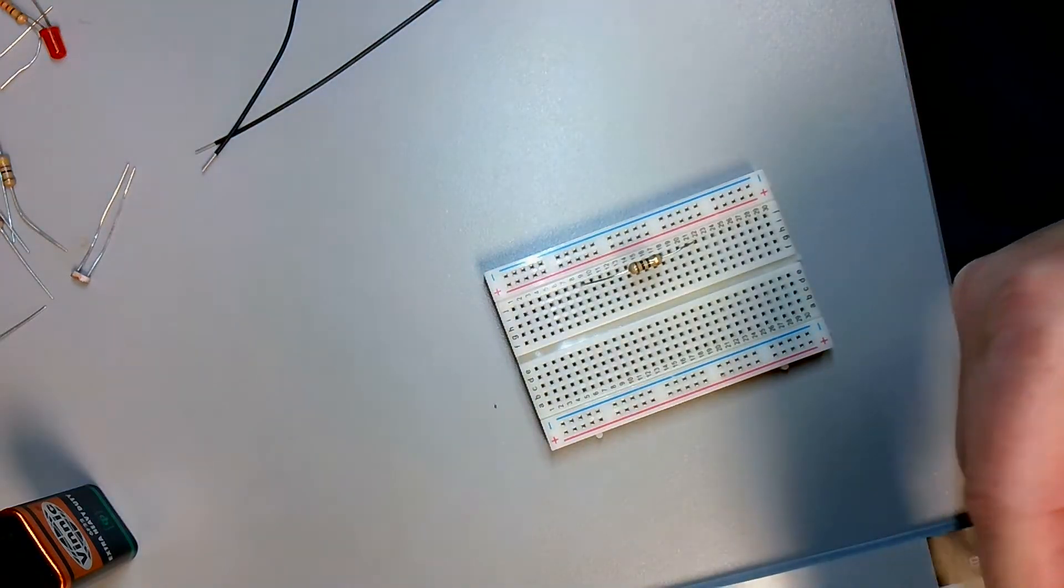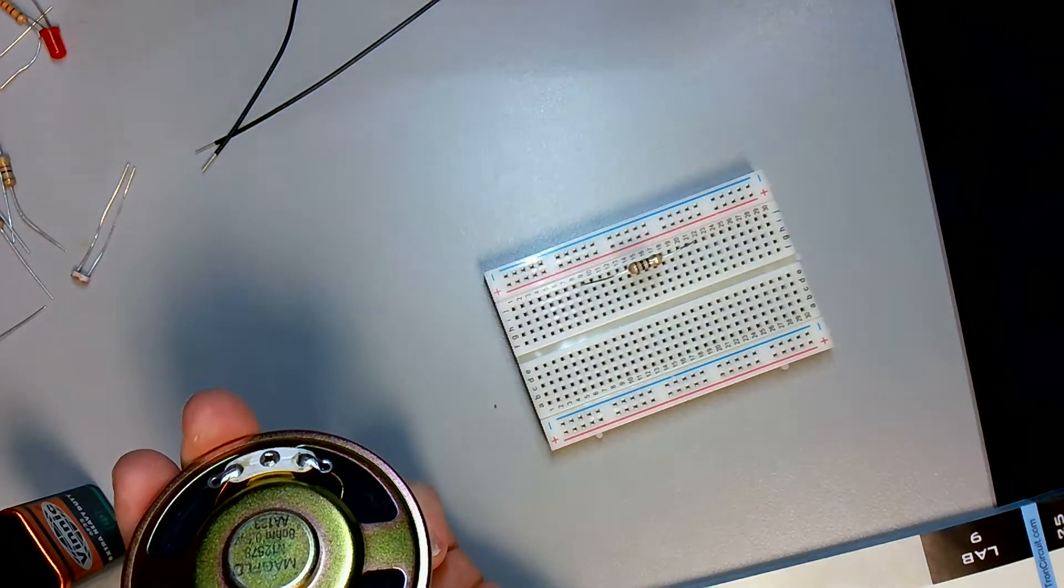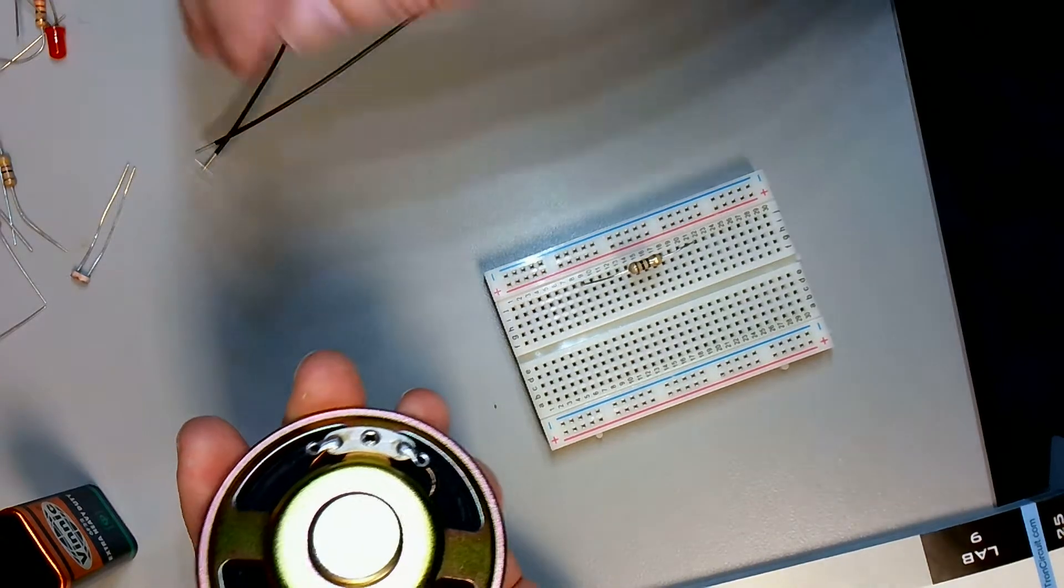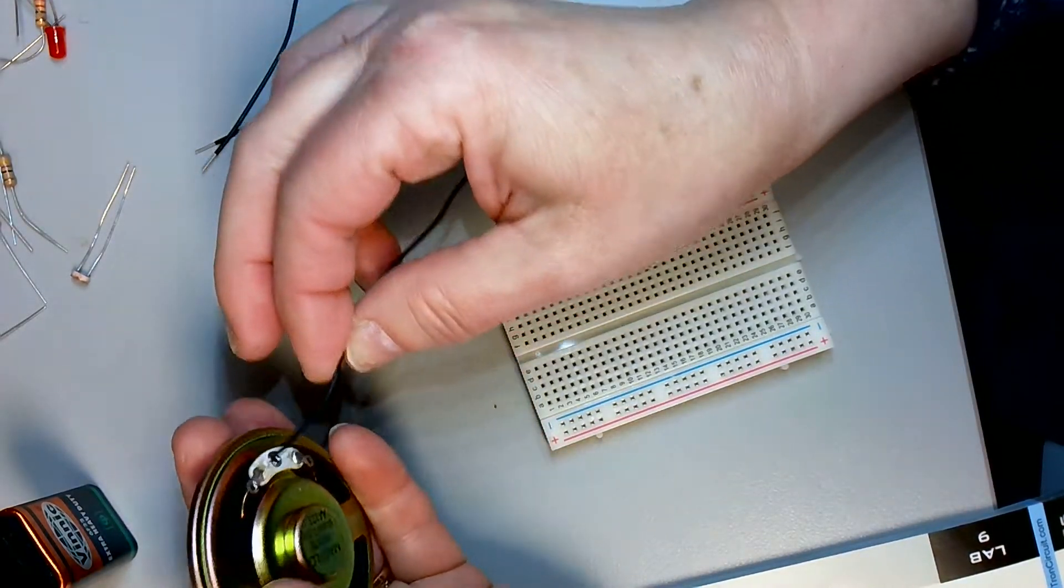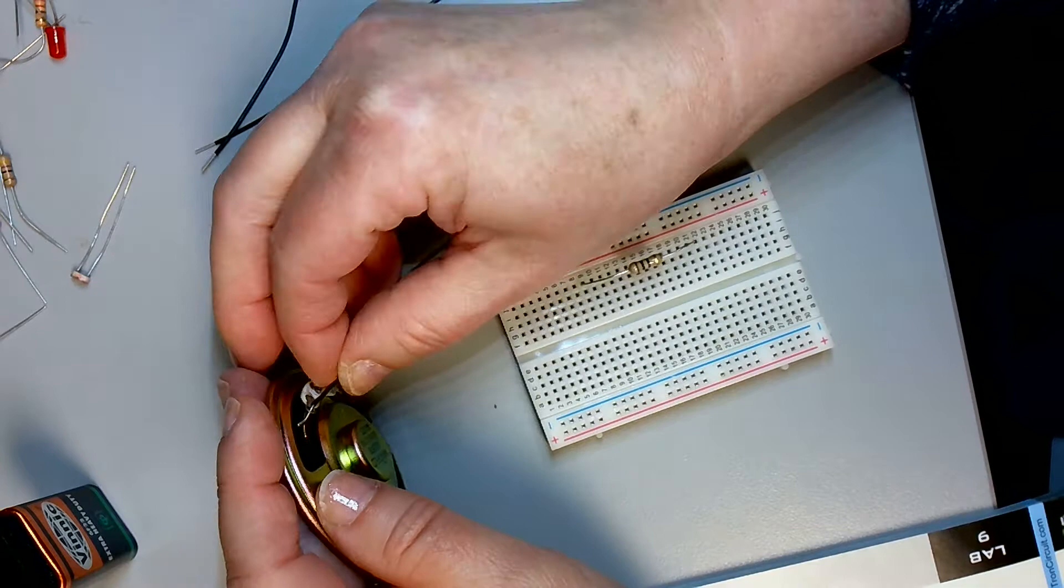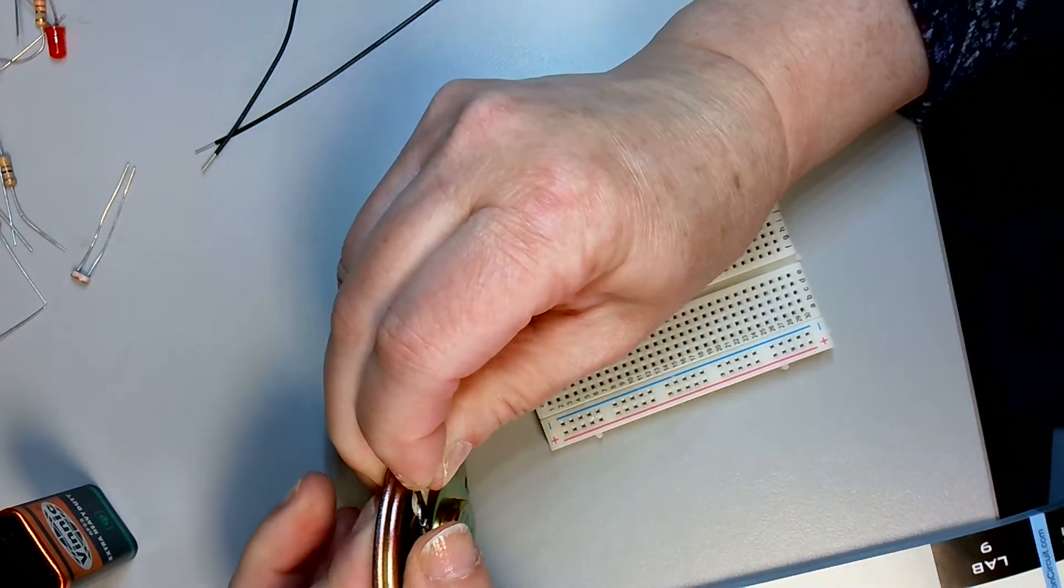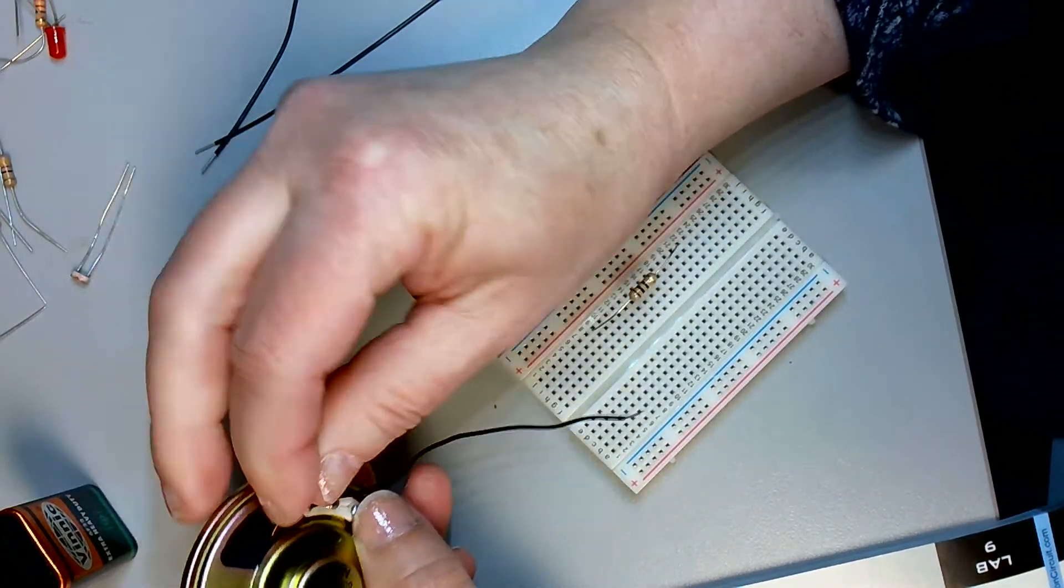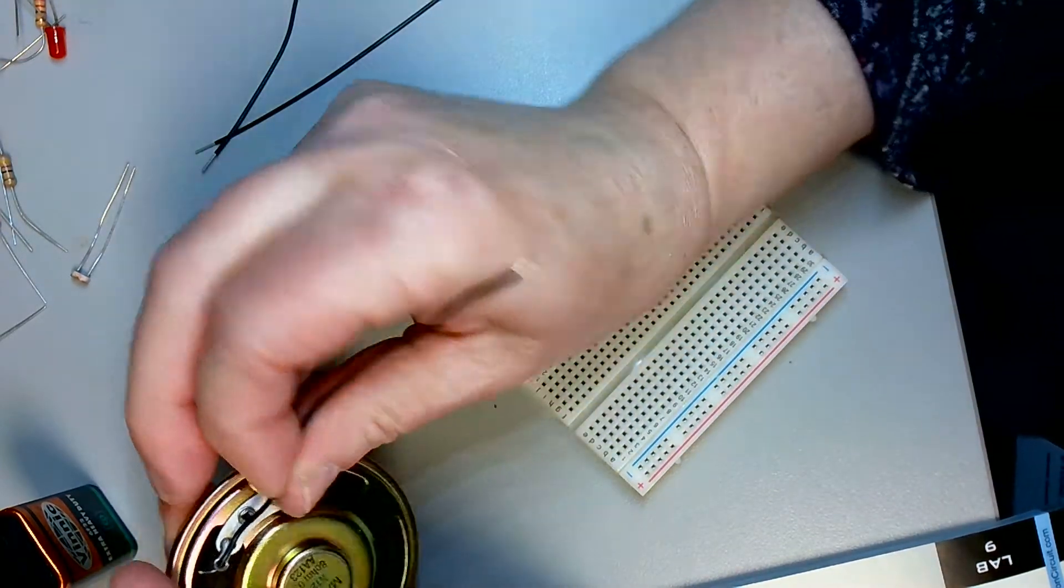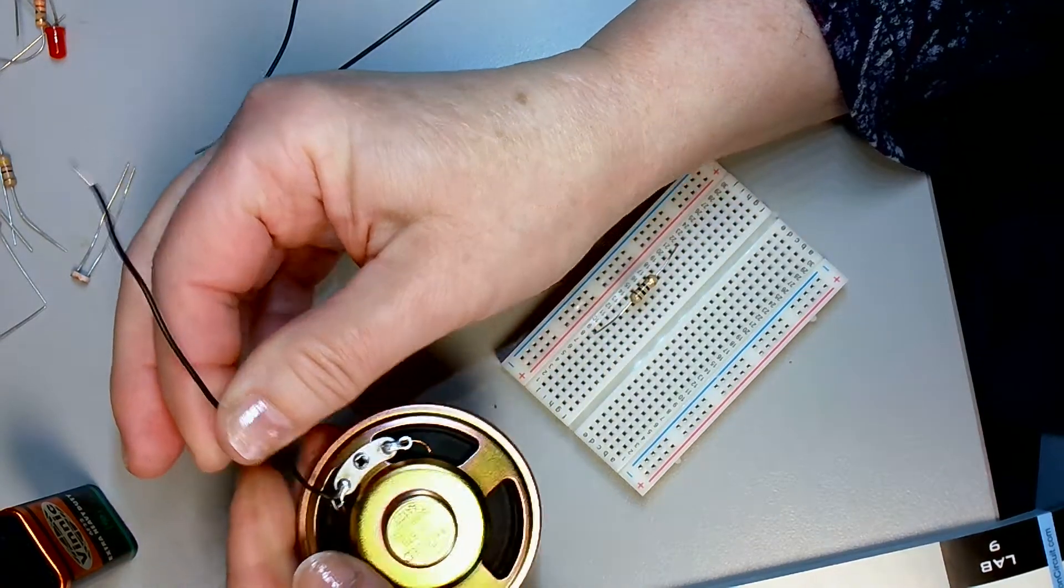Now, to connect the speaker, it's going to be very similar to what we did with the potentiometer, where you're going to take your jumper wire and wrap it around the terminals or lugs on the end of the speaker. So just bend this up. And if you're like I am and you have very brittle fingernails, it may cause you to break a nail, but it'll be alright. Okay, so there's one wire.